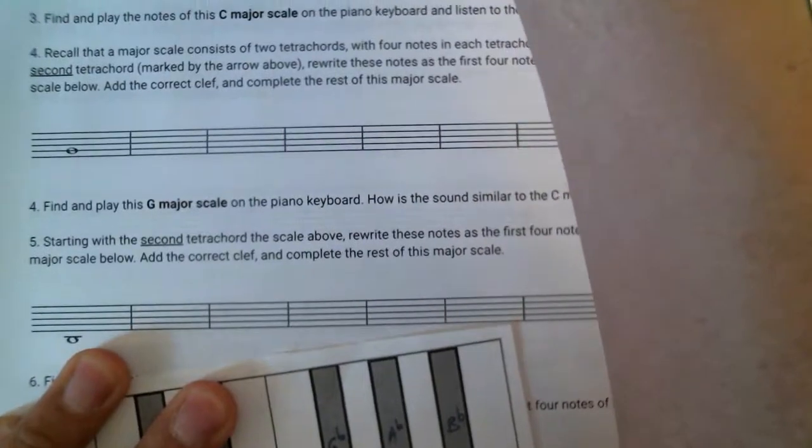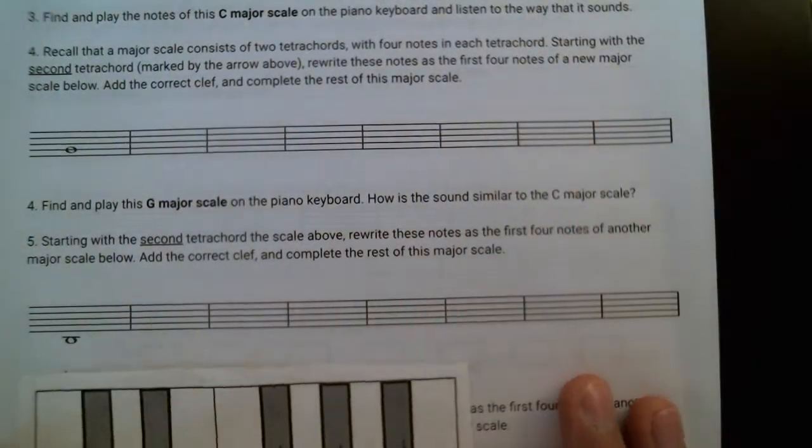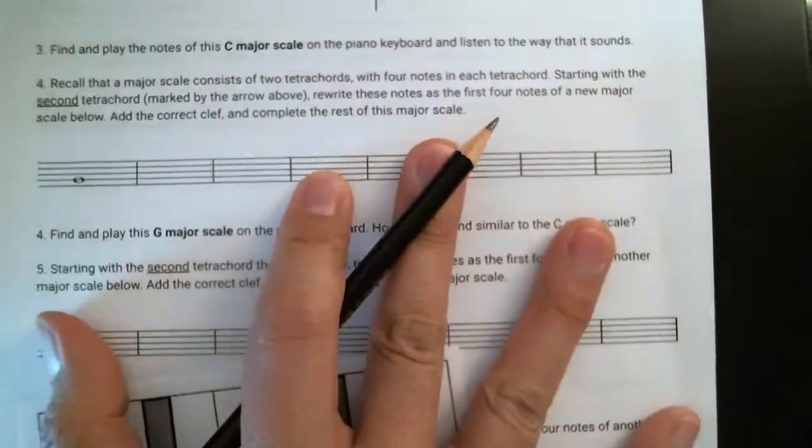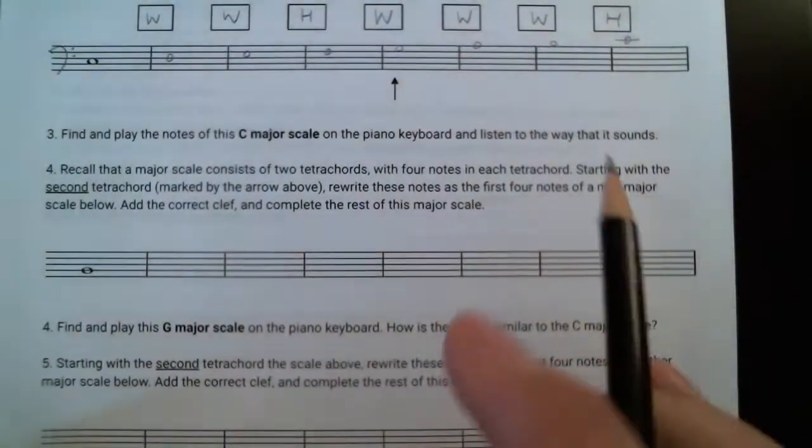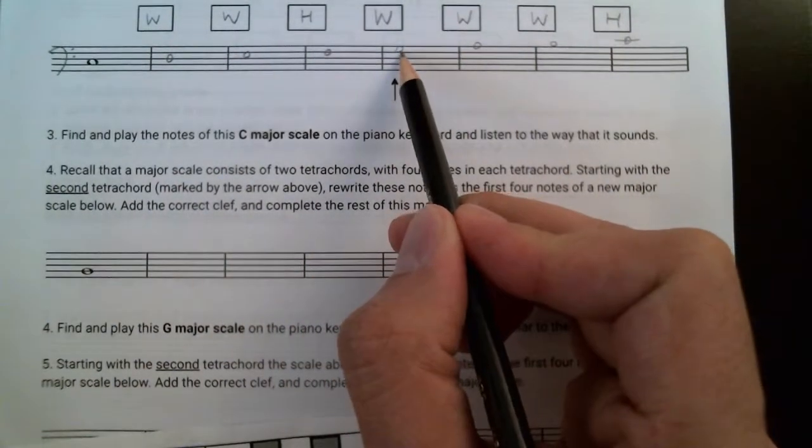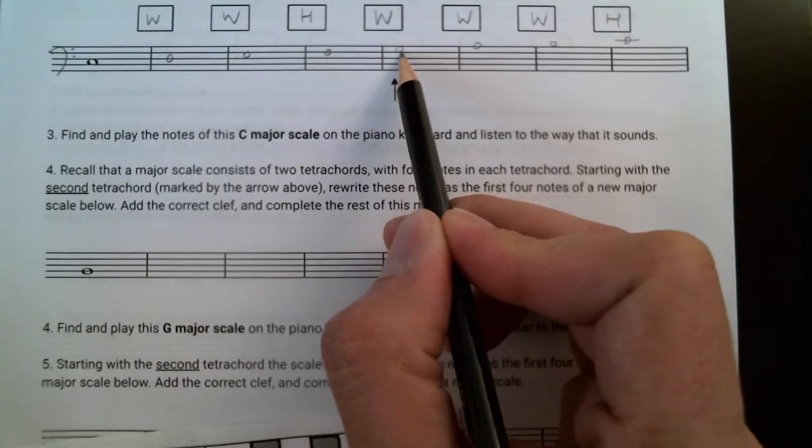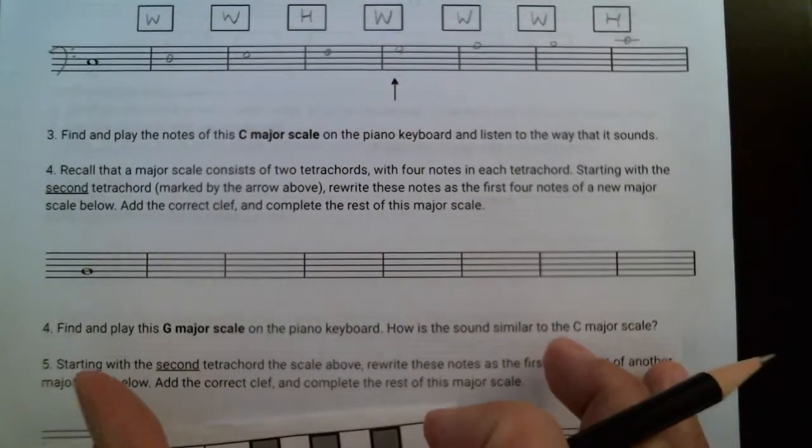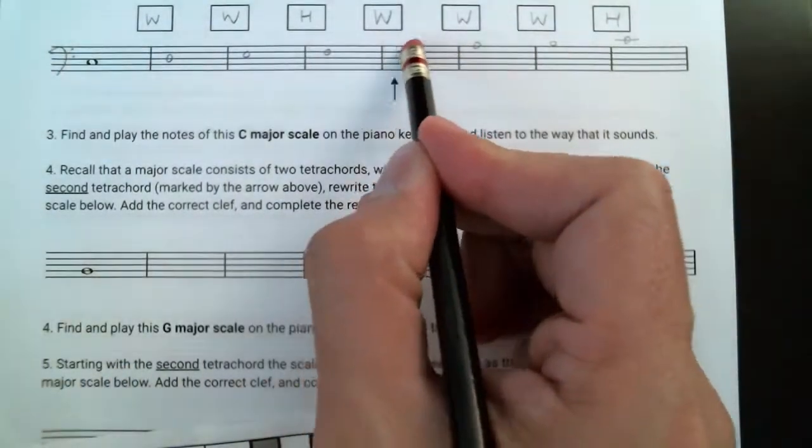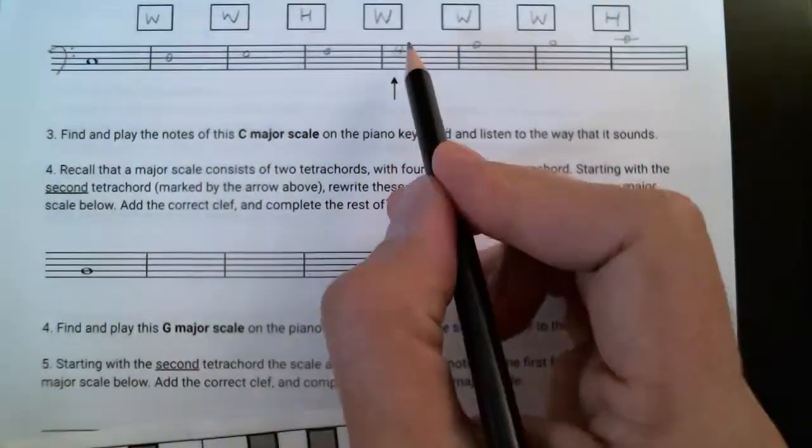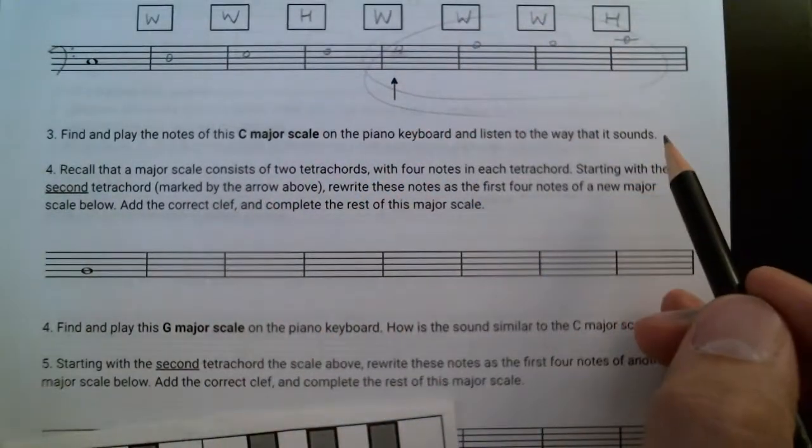Next, I'm going to take a look at the next part here. What I'd like you to do here is take a look at the second tetrachord. Okay, the second tetrachord of the C major scale starts with G, and to find the next major scale for this pattern, we're going to start with this tetrachord, G, A, B, C.